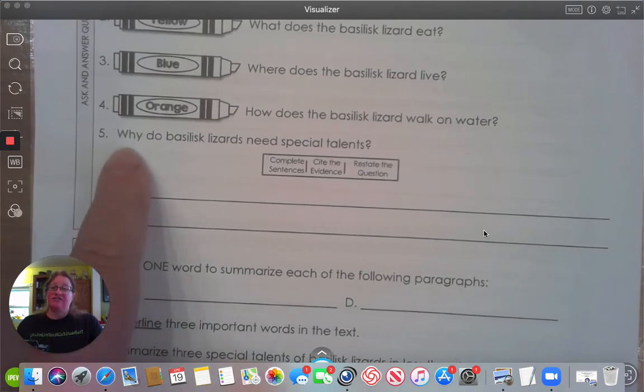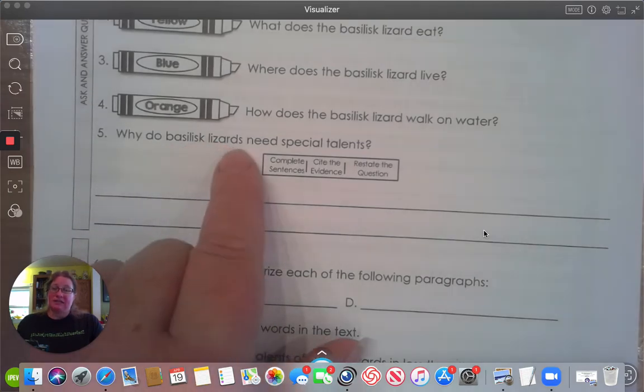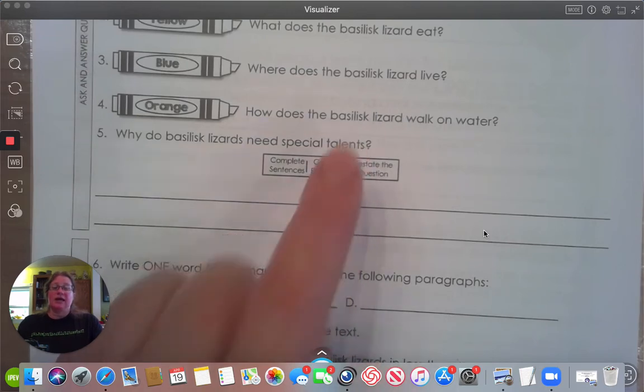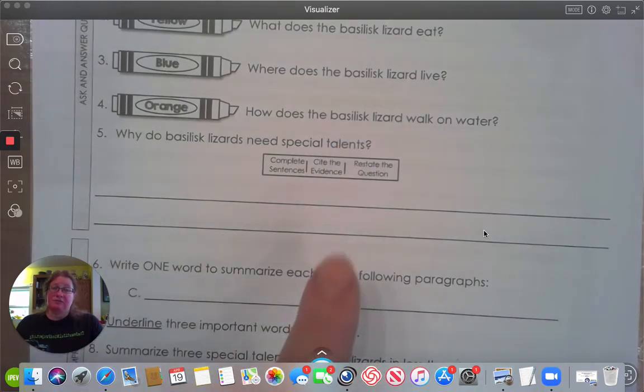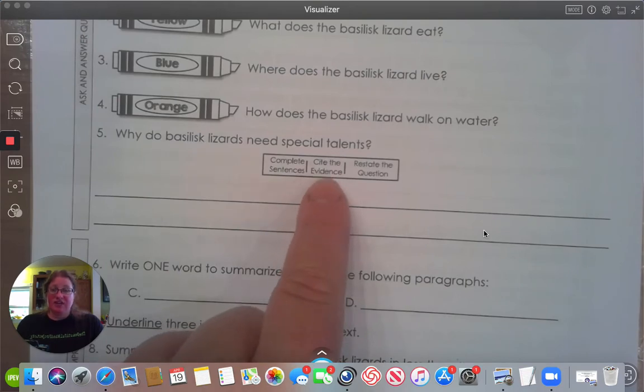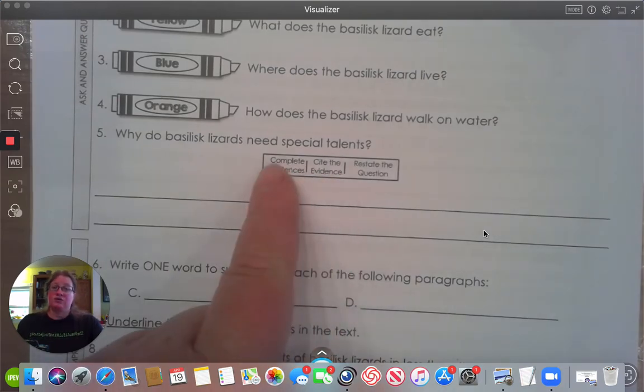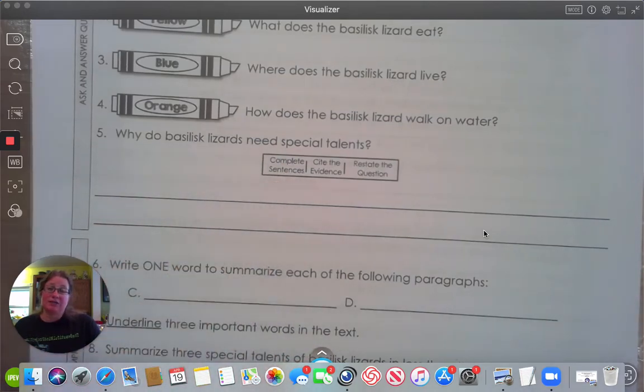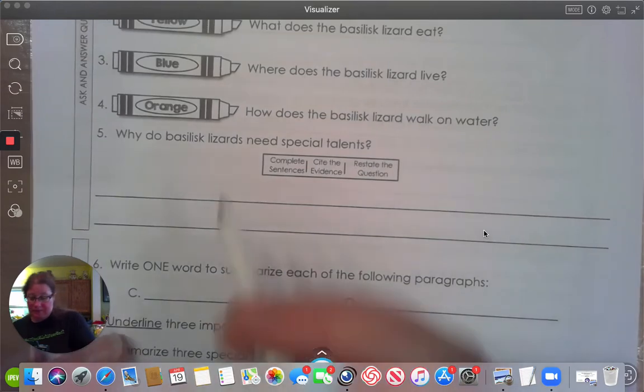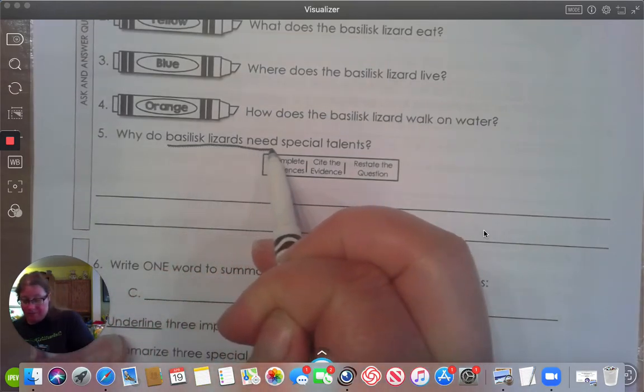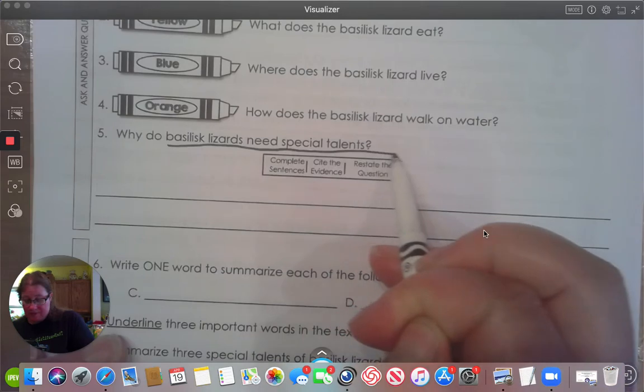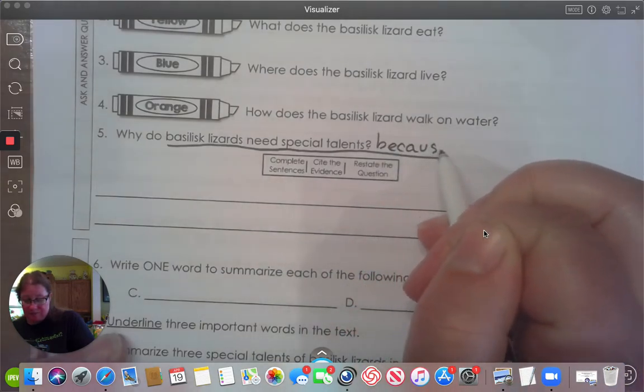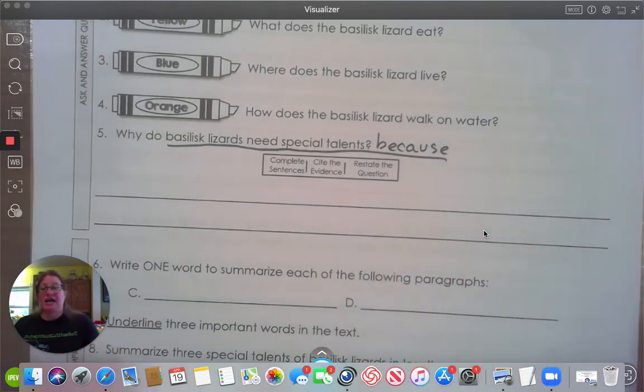Number five. Why do basilisk lizards need special talents? Our lizard did several special things. You need to find your evidence, reuse some of the vocabulary in your question, and write a complete answer. I would add because and use that as your sentence stem.